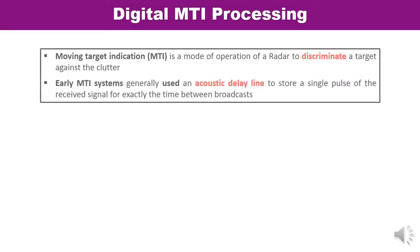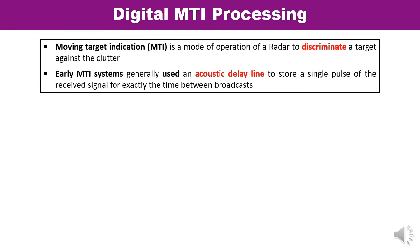Let us discuss the function of moving target indication. Moving target indication is a special mode of operation of radar where its function is to discriminate the target against the clutter. Clutter is caused by stationary objects such as a mountain, a high-rise building, or any such object which is reflecting the signal and may coincide with the signal reflected from the target. Among that clutter, the signal received from the moving target is identified. An MTI radar works very efficiently in that case.